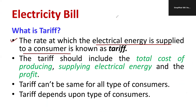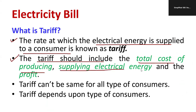In that one thousand rupees, what are the factors which are covered? The tariff comprises of: the total cost of electricity production, the total cost of supplying electrical energy, and a reasonable profit. These are the three things which are included in the tariff.